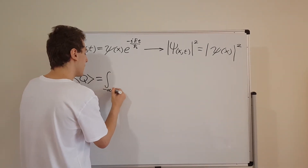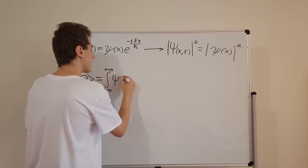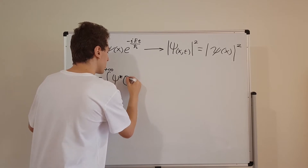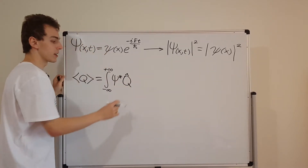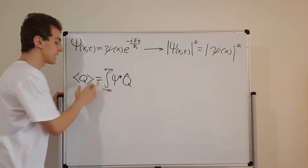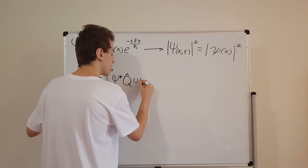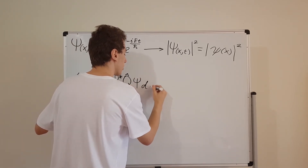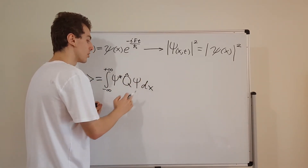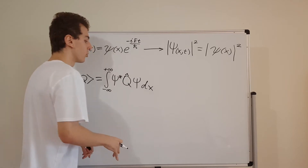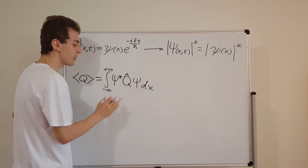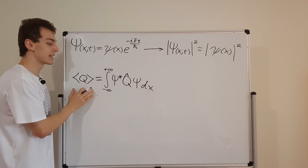We have the integral from minus infinity to plus infinity of psi star — this is capital psi — and then we put the operator in the middle. Q-hat is the operator that represents the observable q, and we're taking the expectation value of that, finishing with psi and integrating with respect to x. The integral signs are like the bread of the sandwich, psi star and psi are the lettuce, and the operator in the middle is all the tomatoes and cheese. This operator sandwich represents our expectation value.